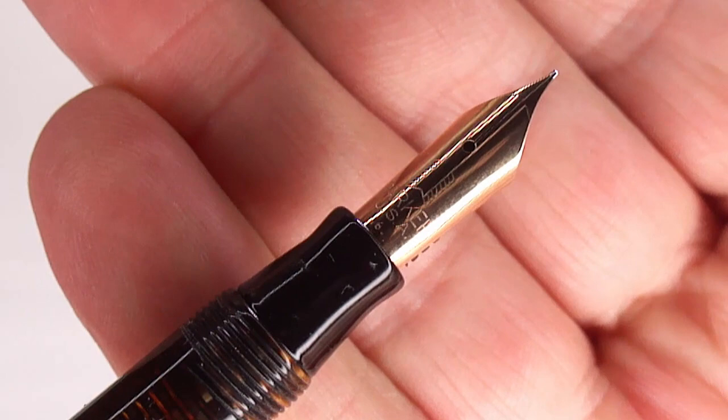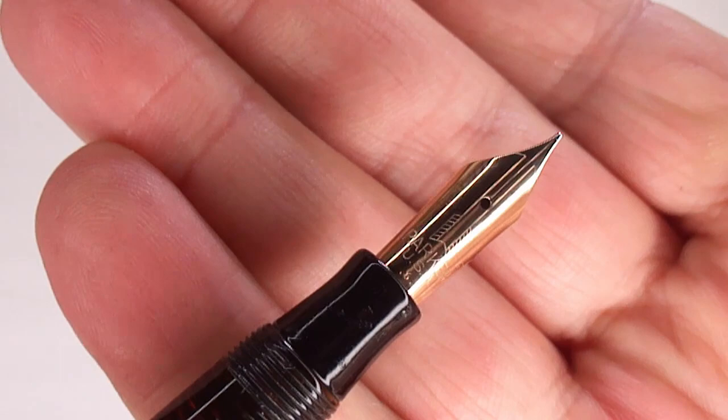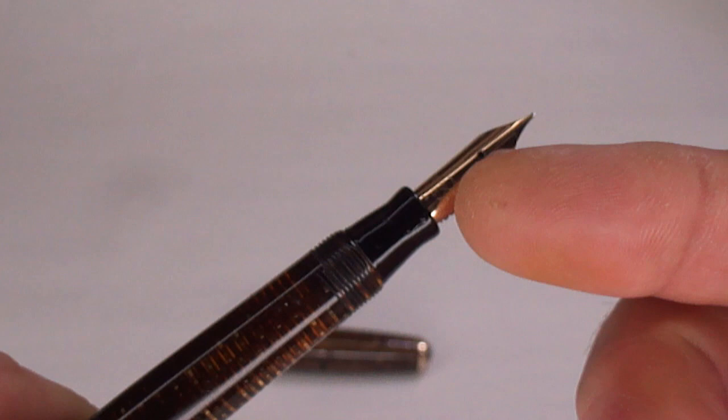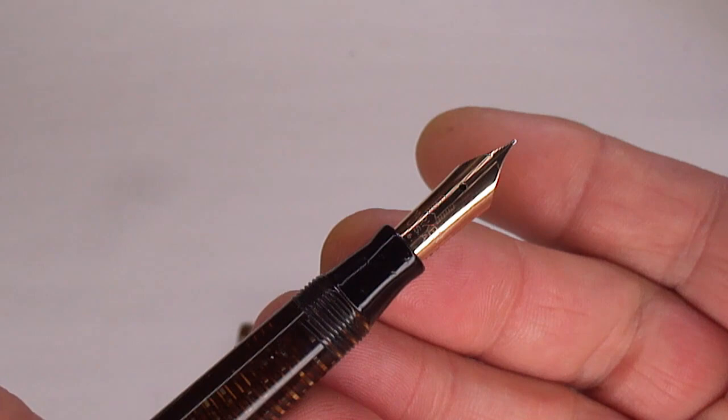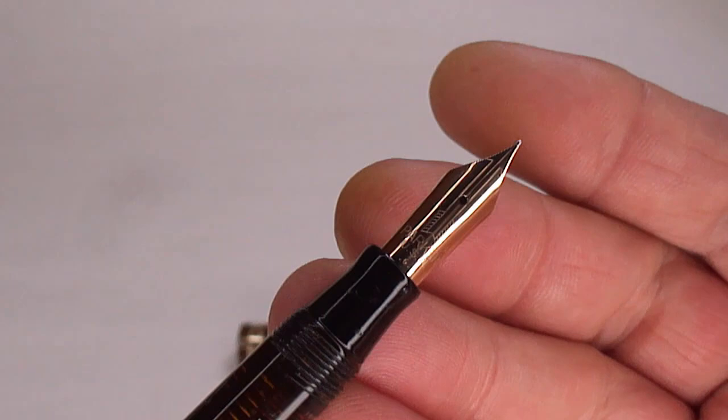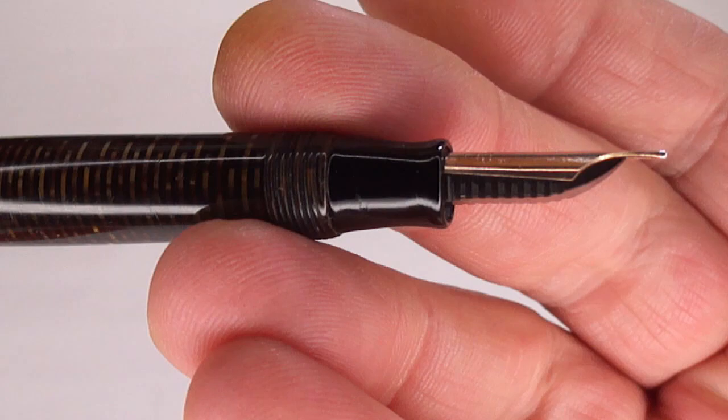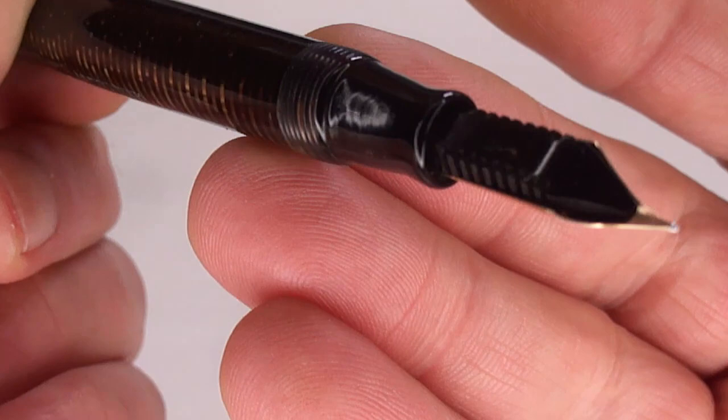What it also has, but I think it's hidden inside the section, is a letter R for Romeo. So this might actually be a replacement nib because the number six I would say indicates 1946. The letter R may indicate it's a replacement nib, so maybe after somebody bought it they replaced the nib for something better for their liking. There's the feed underneath, you can see everything is lovely and clean.